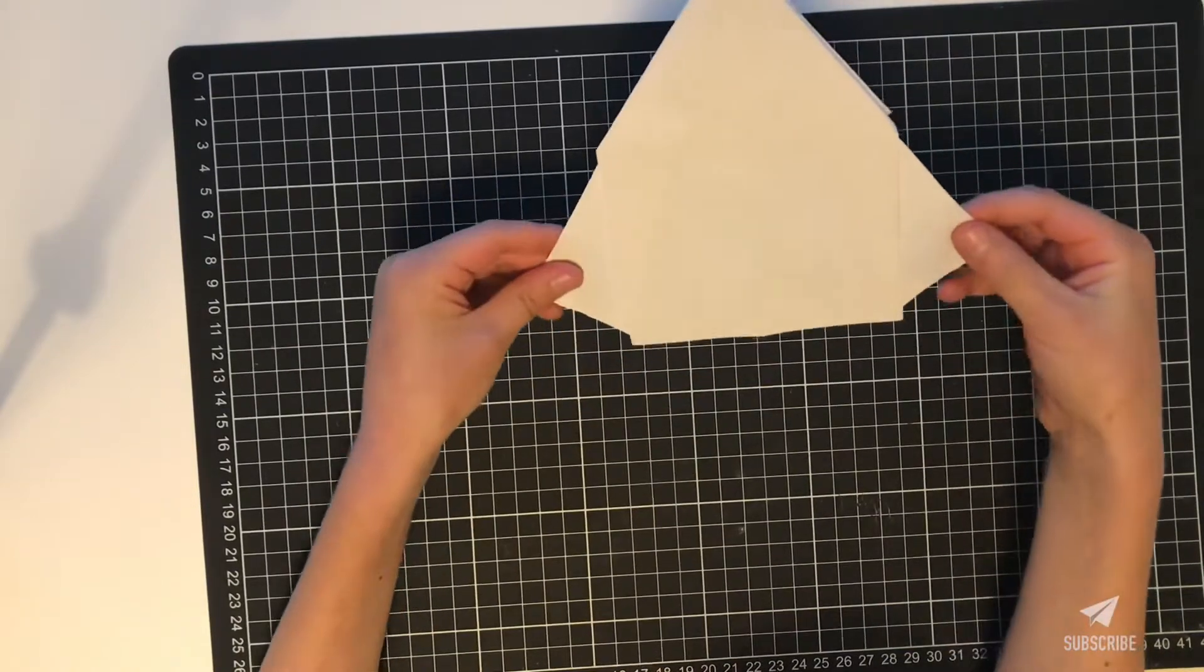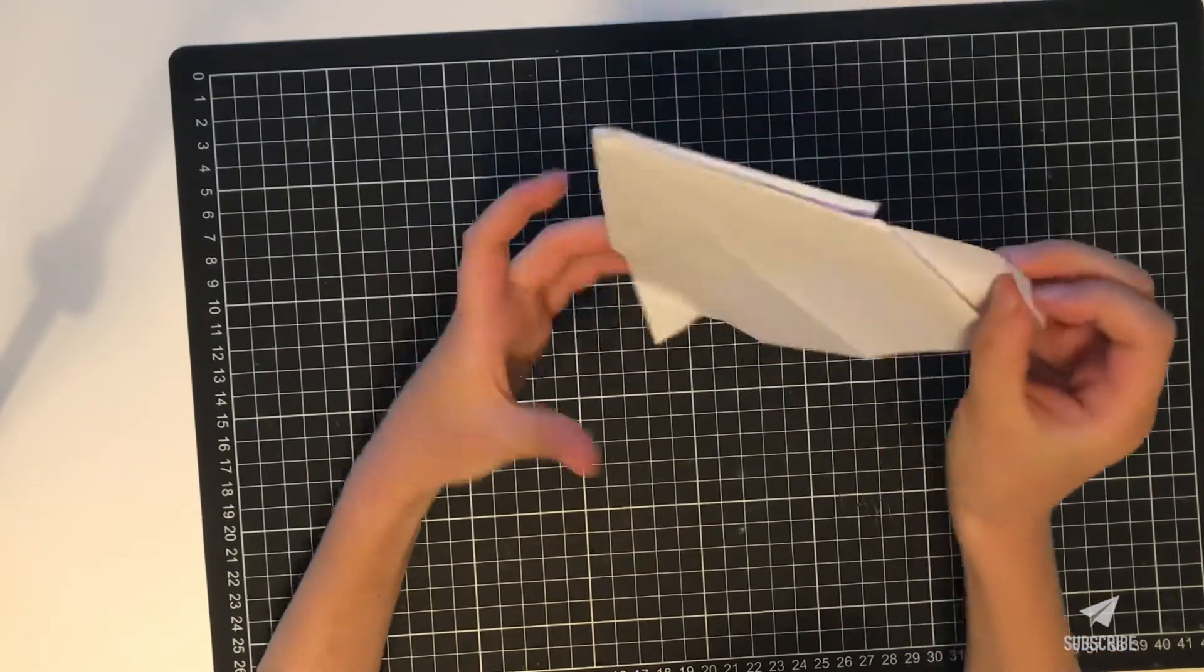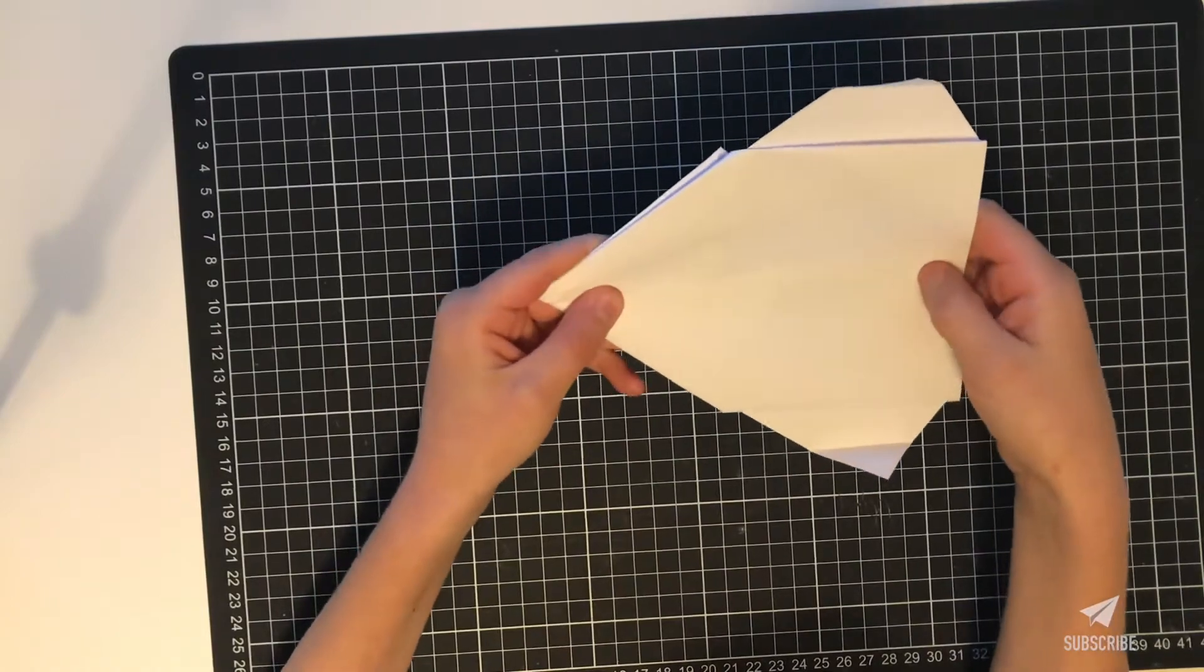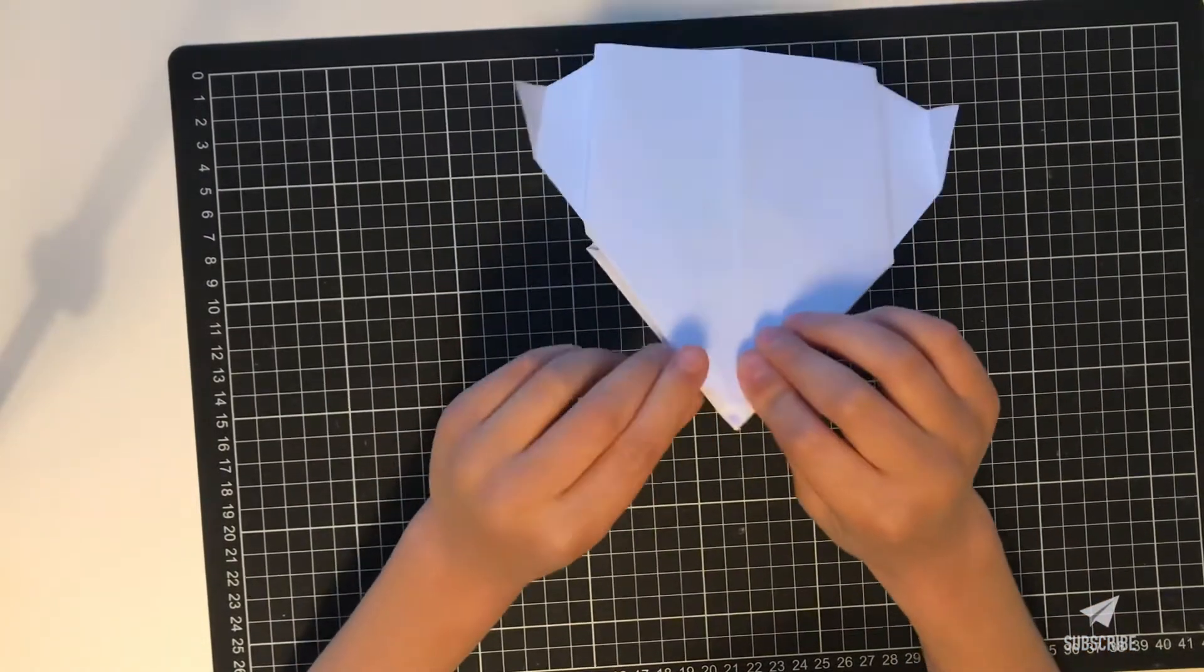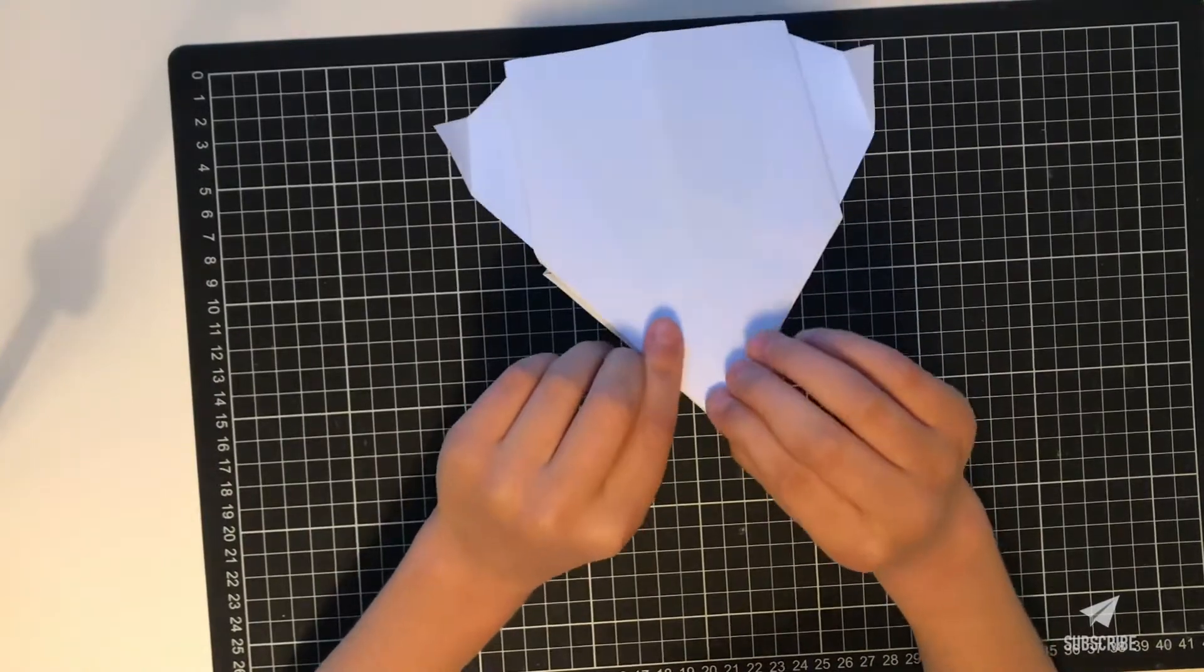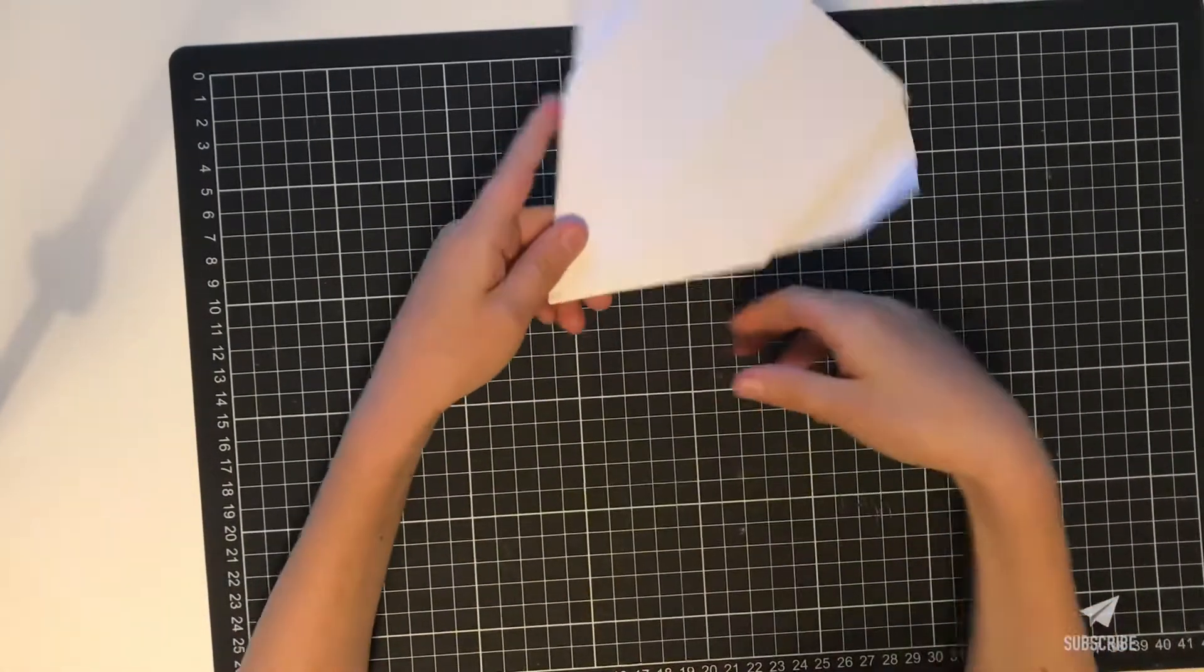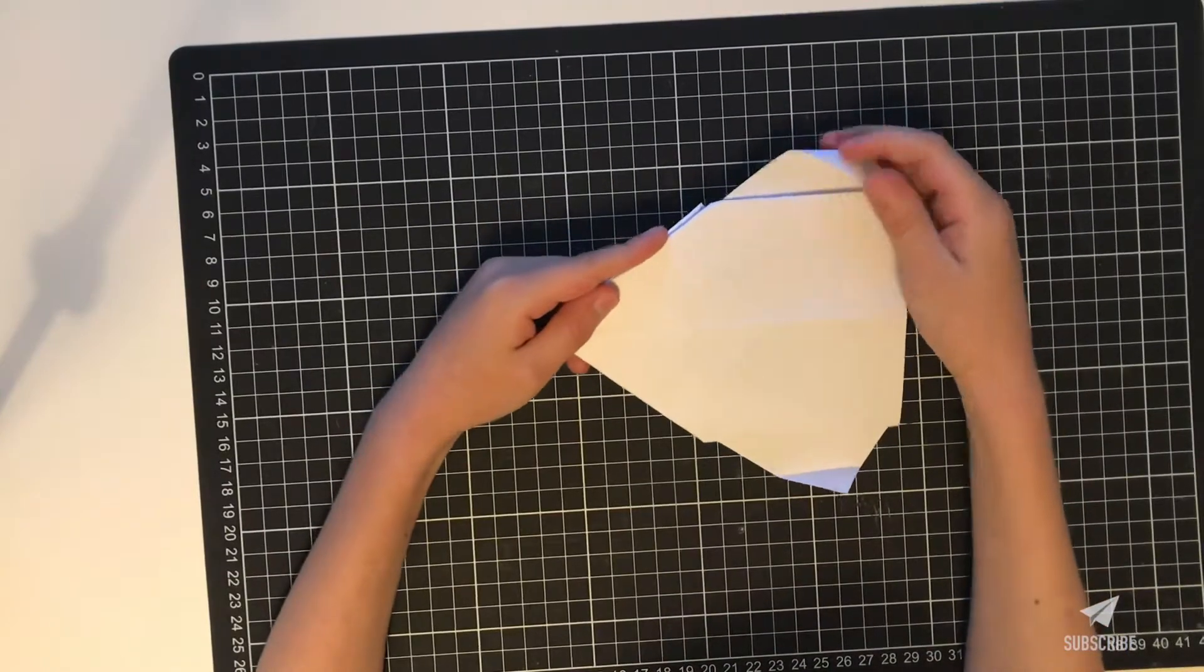It's like a diamond with folded edges. If you throw it very hard up, it will do a loop and lots of cool tricks.